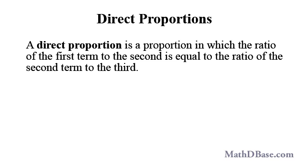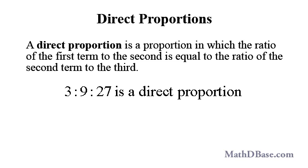A direct proportion is a proportion in which the ratio of the first term to the second is equal to the ratio of the second term to the third. 3 to 9 to 27 is a direct proportion since 3 over 9 is equal to 9 over 27.